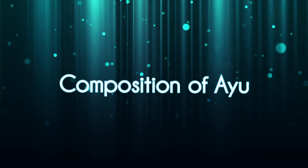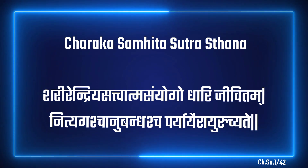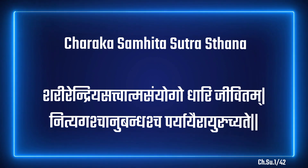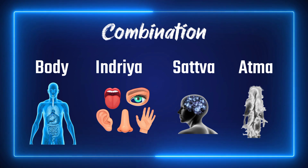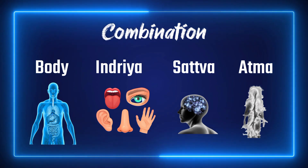Composition of Ayu: Maharshi Charak has described Ayu in the first chapter of the Sutrasthan of Charak Samhita. Maharshi Charak said that the union of body, sense organ, sattva and the soul is known as Ayu. So let's try to present all these elements one by one briefly.